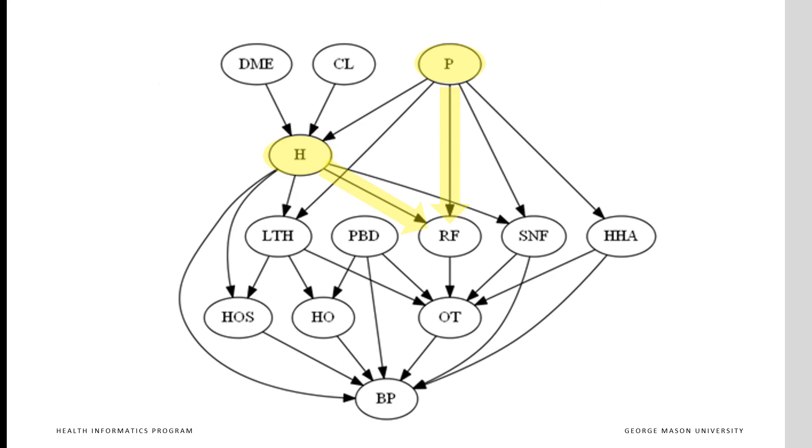H and P are the parents in the Markov blanket of RF. They are significantly related to RF. They occur prior to RF. If one controls these variables, then de facto one controls the effect of any other preceding covariate on RF.